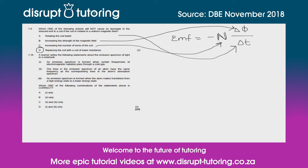Question 1.10: a learner writes three statements about emission spectra. Statement one says an emission spectrum forms when electromagnetic radiation passes through a cold gas — this is incorrect, as it doesn't pass through a cold gas but through a prism or similar device. Statements two and three are correct: the lines in an emission spectrum have the same frequency as the corresponding absorption spectrum lines, and emission spectra form when an atom transitions from a high to a lower energy state. The answer is C.